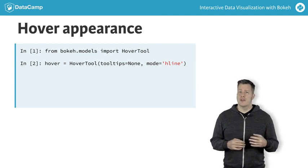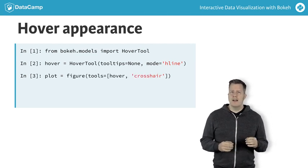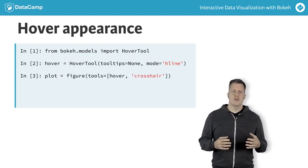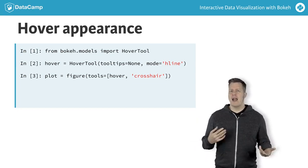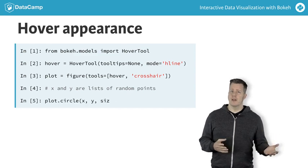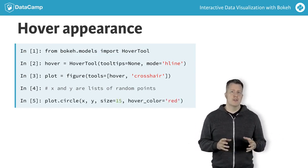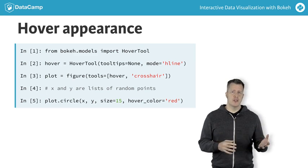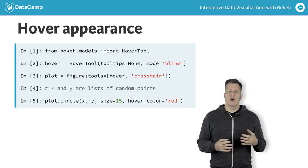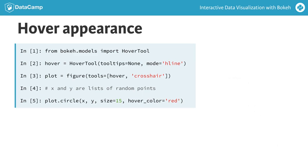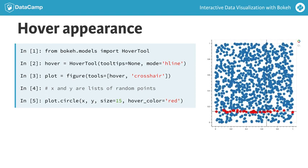We add this tool as well as a crosshair tool to our plot by passing a list containing the hover tool and the string name crosshair to the tools argument of figure. Having added our hover tool, we can now also specify a hover policy. This is very similar to how selection policies are specified — instead of property names prefixed with selection or non-selection, we add property names prefixed with hover. In this example, we have added hover color equals red to our call to circle. Accordingly, whenever a circle is hovered over, it is drawn as red.